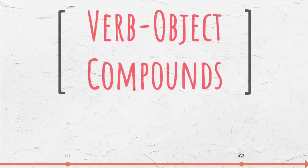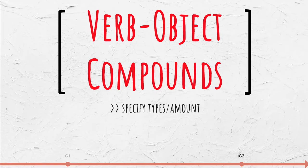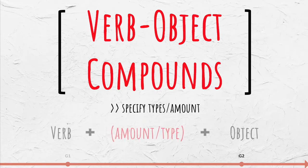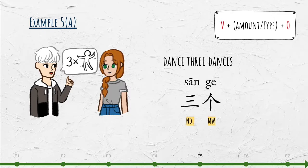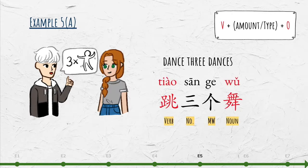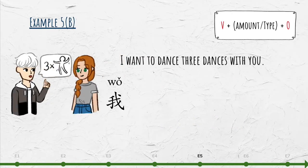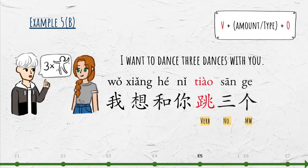If we want to specify types or amount, we place that specification between the component parts of these verbs. To say 'dance three dances,' as in 'I want to dance three dances with you,' place the number and measure word 三个 between the verb 跳 and the noun 舞. Thus, 'to dance three dances' is 跳三个舞, and 'I want to dance three dances with you' is 我想和你跳三个舞.